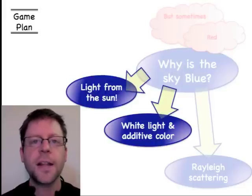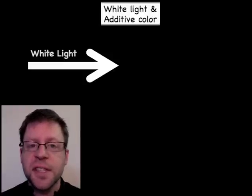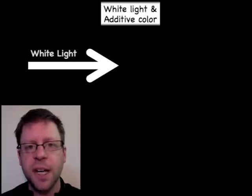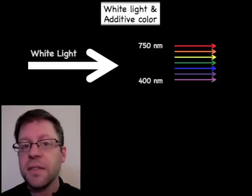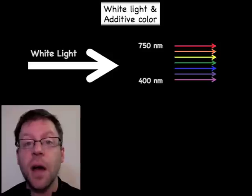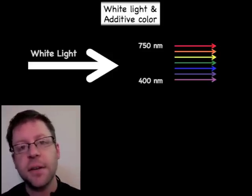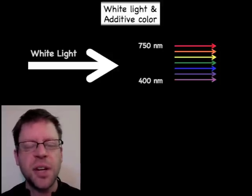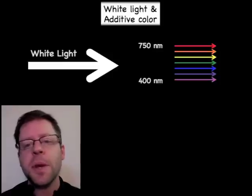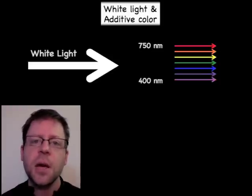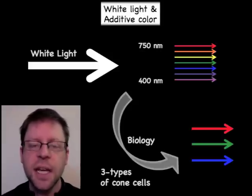The next topic is white light and additive color. Starting with a white arrow representing white light — many of you know white light is made up of all different colors. We can talk about the colors of the rainbow split out from a prism. We start with long wavelengths — the reds — and on the other end at about 400 nanometers you've got violet, with blues close to that end. A nanometer is a billionth of a meter.